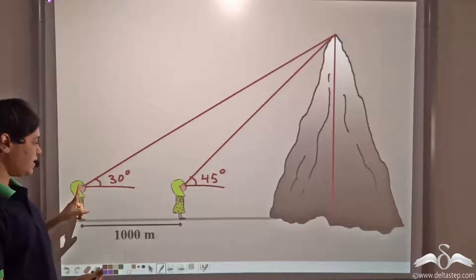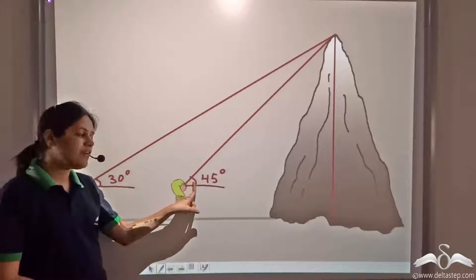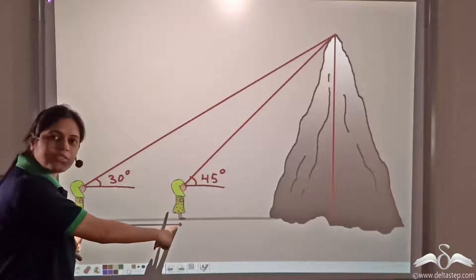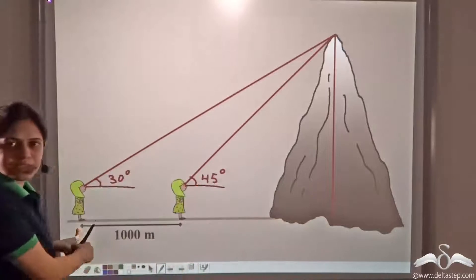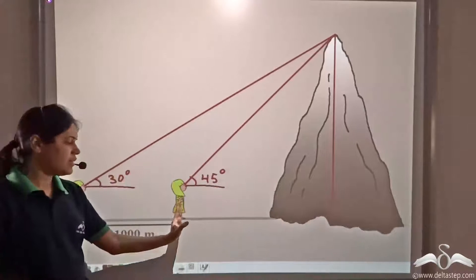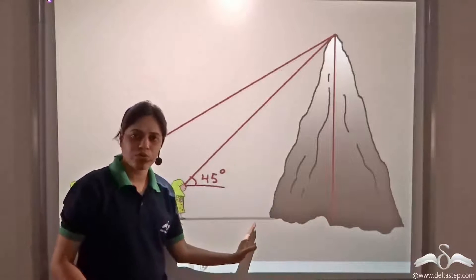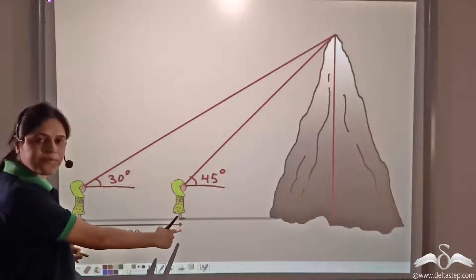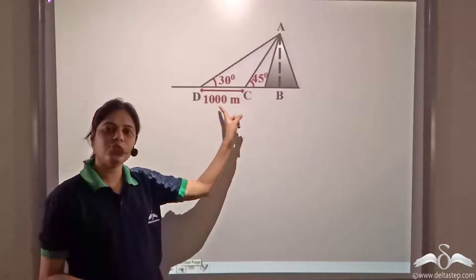What we know is the angle of elevation at the first point is thirty degrees, the angle of elevation at the second point is forty-five degrees, and the distance between these two points is one thousand meters. So although we do not know the entire distance from the point of observation to the foot of the object, we know the distance between the two points of observation, which is one thousand meters. So let us calculate the height of this mountain.